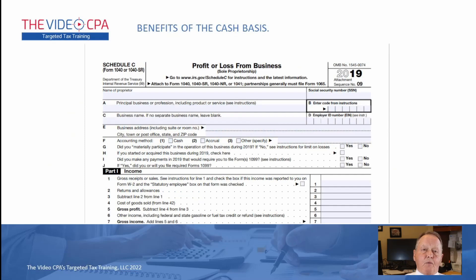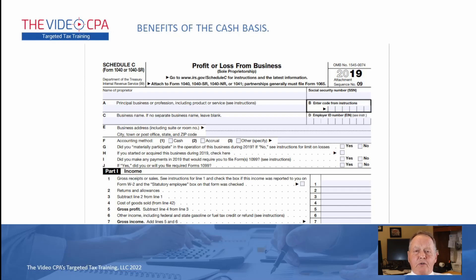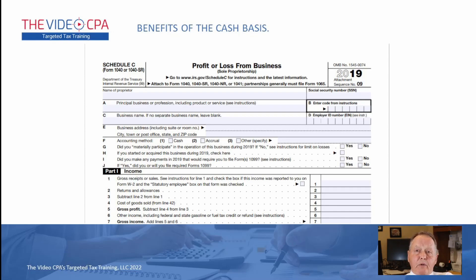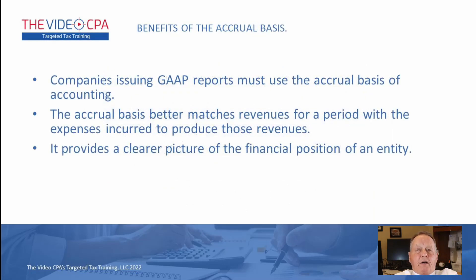Let's look at where you make that accounting method decision on your tax return. On line F, under accounting method, you can choose cash, accrual, or other. If you're a small business, I tell you to use cash. If you're a big business, you may be required to use the accrual method. There's nothing wrong with the accrual method — it's just a little more complex than the cash method and requires more accounting knowledge to use. Companies using GAAP reporting must use the accrual method for their financial reporting.